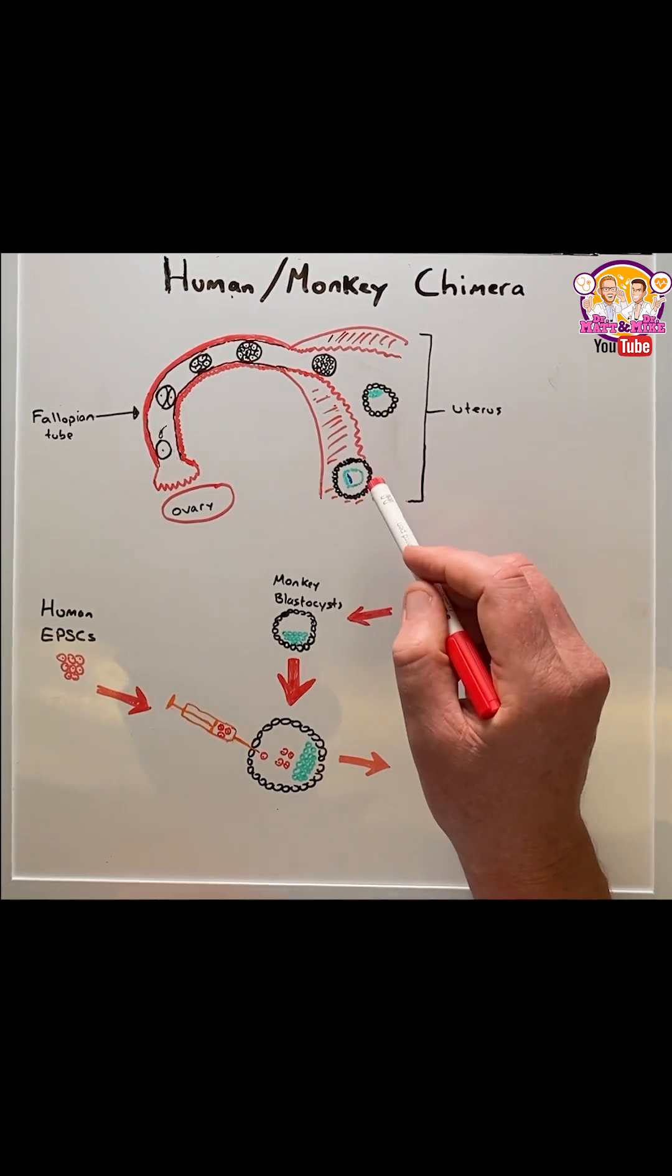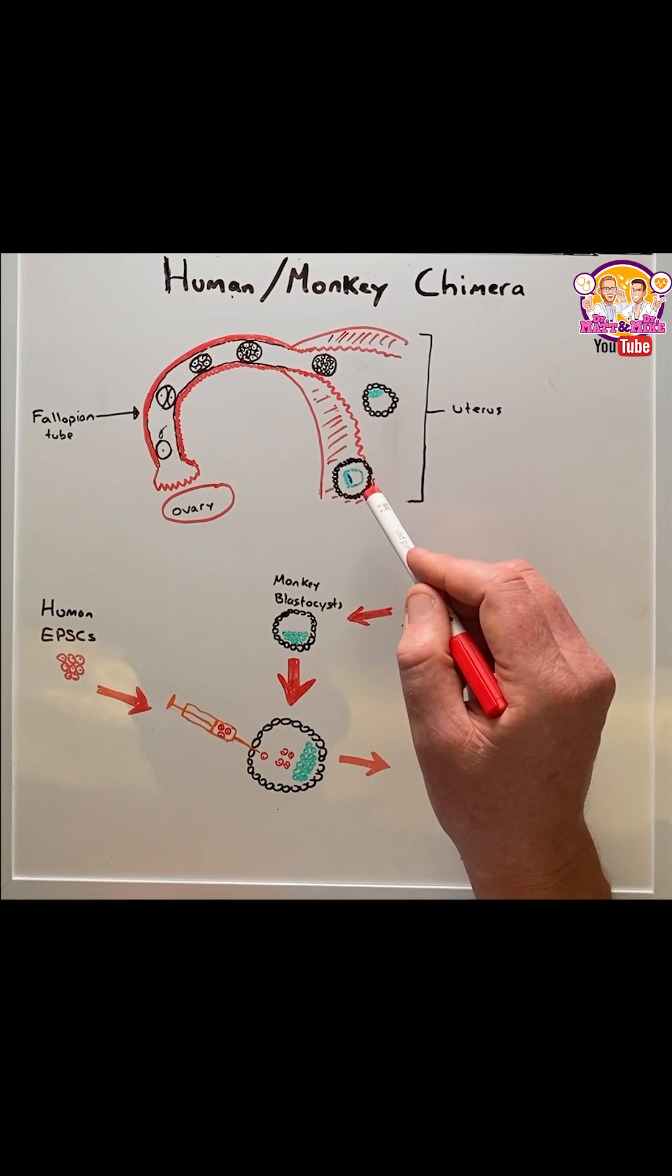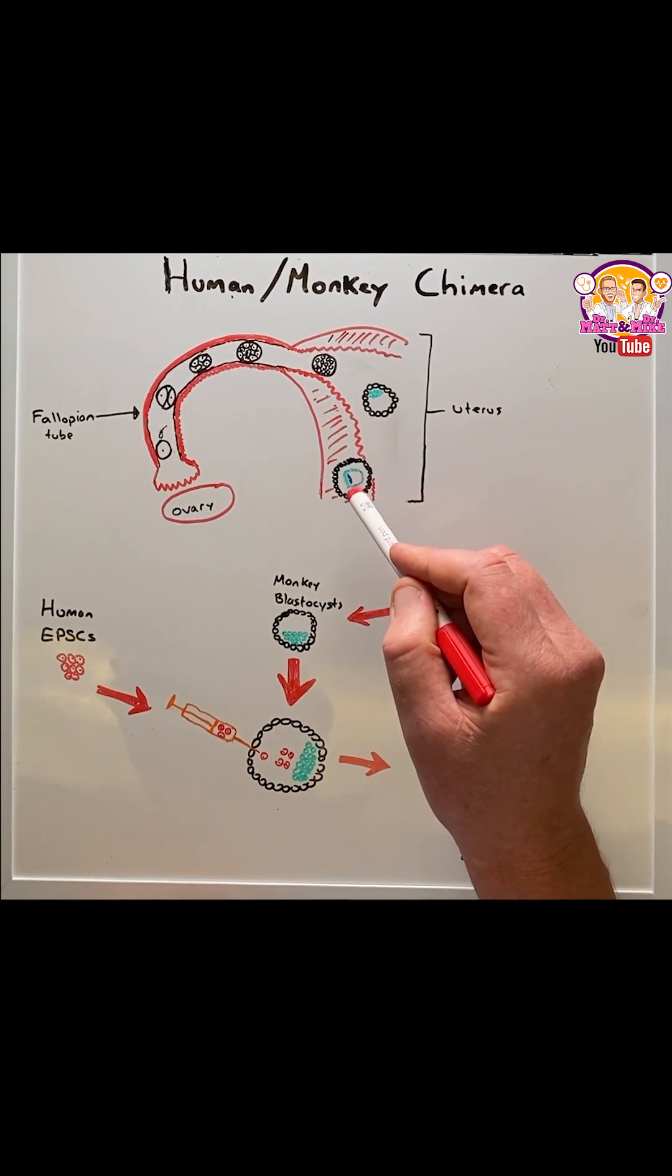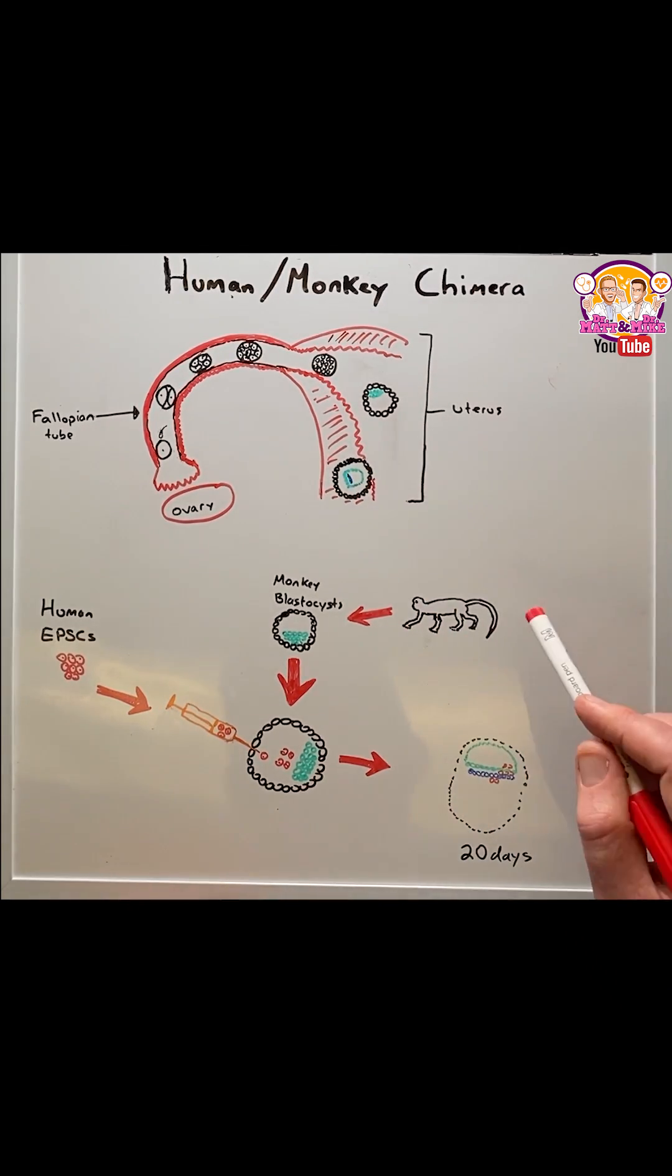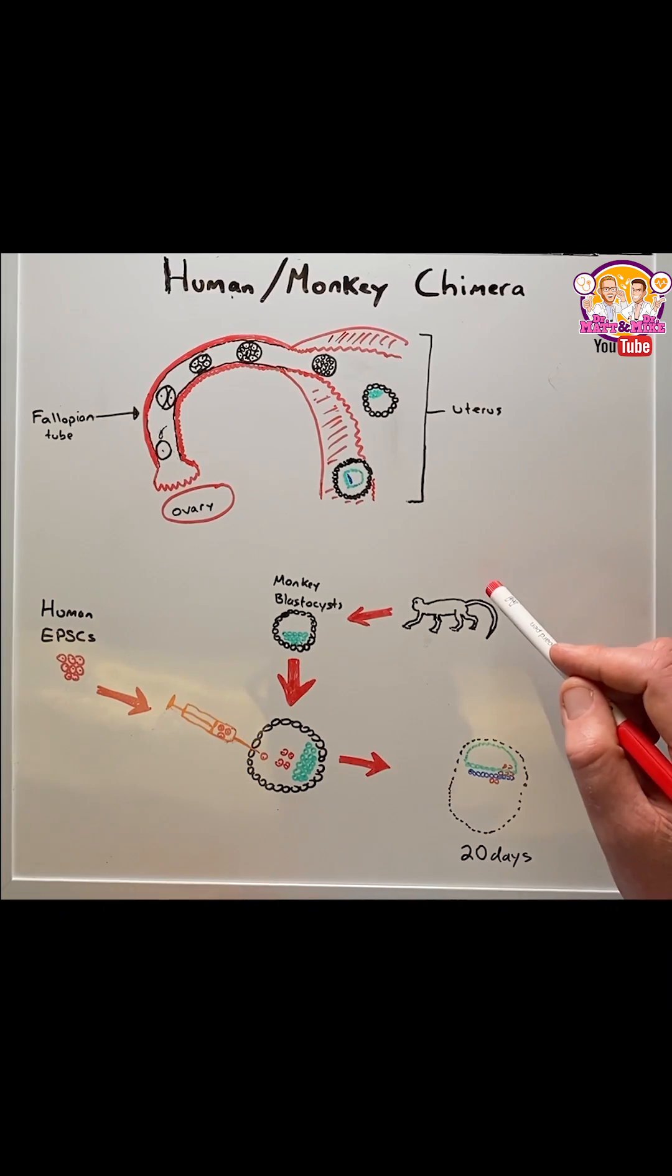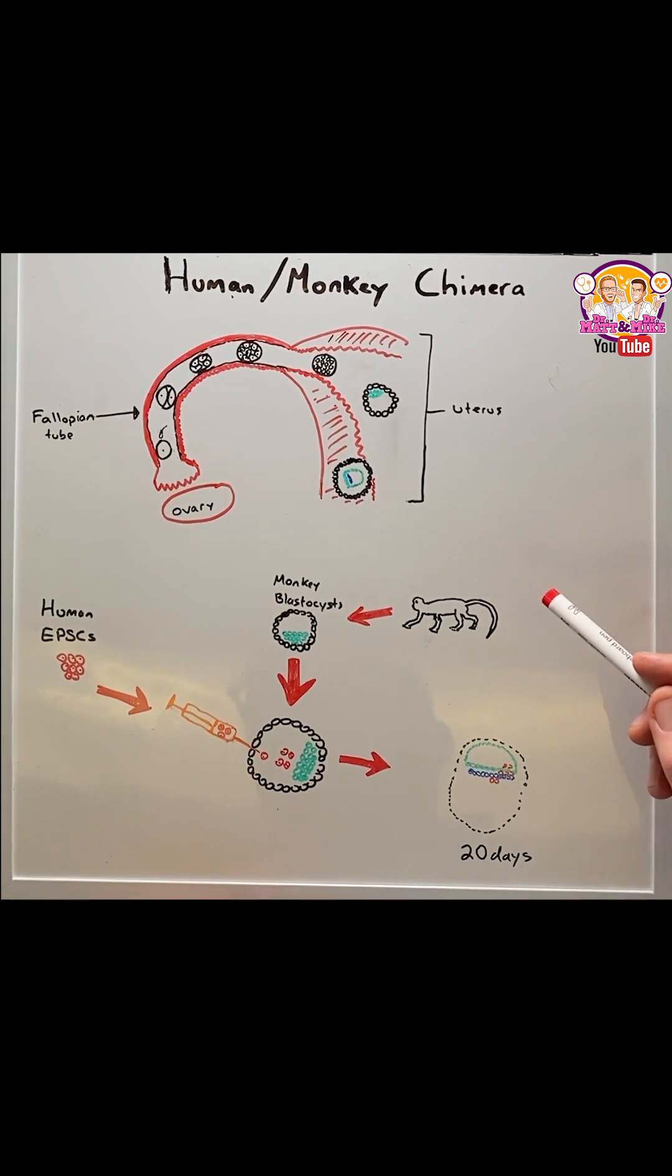By week three the embryo cells are starting to differentiate to make all the different organs within the body. Now this takes us to the study by Tan and colleagues published in the journal Cell.